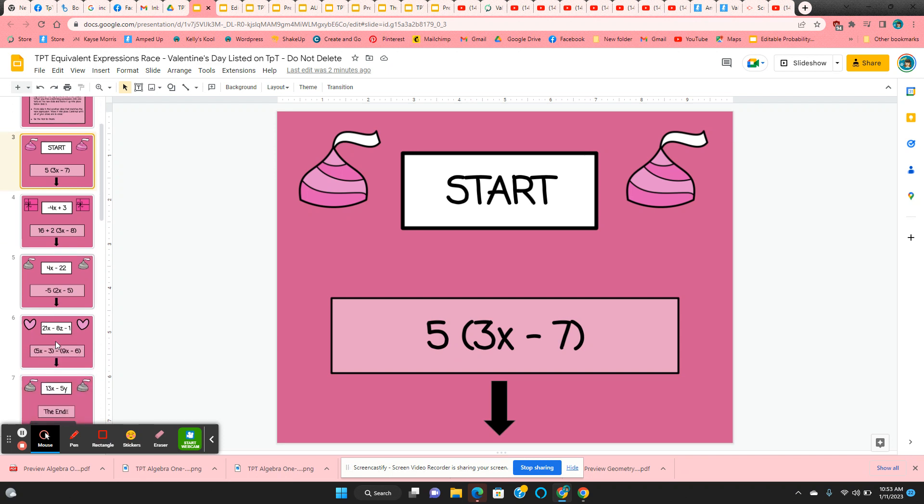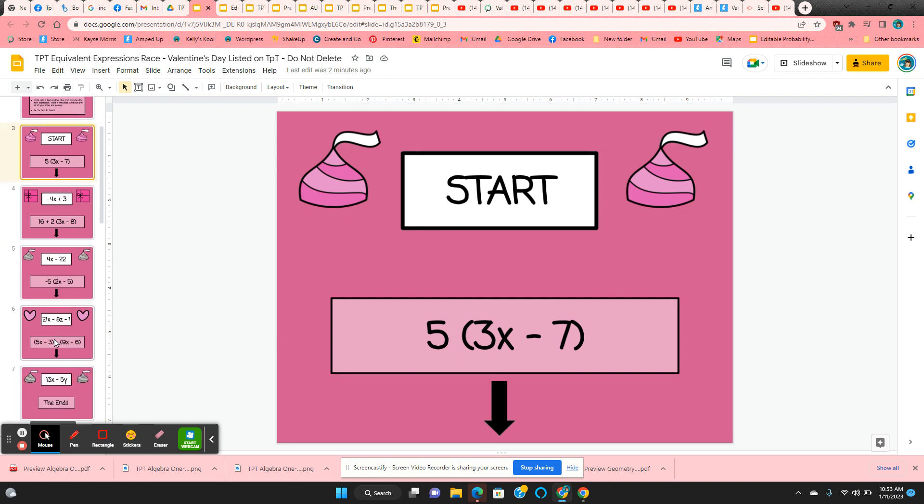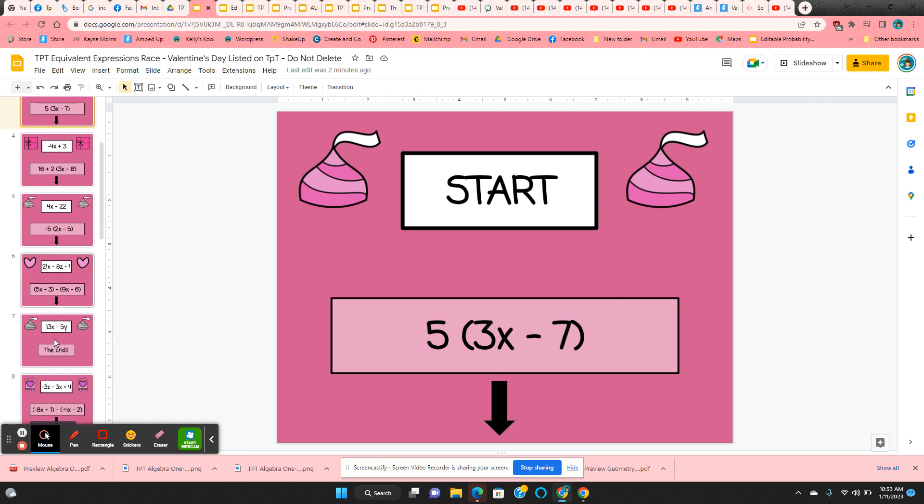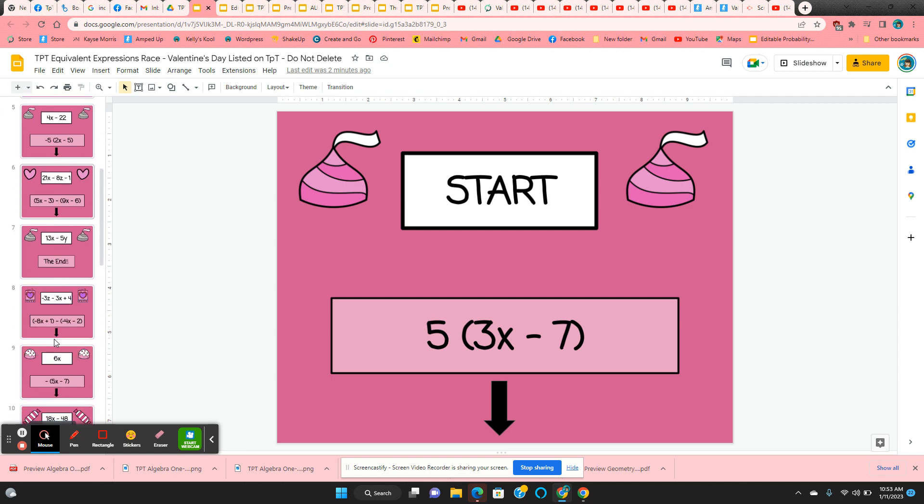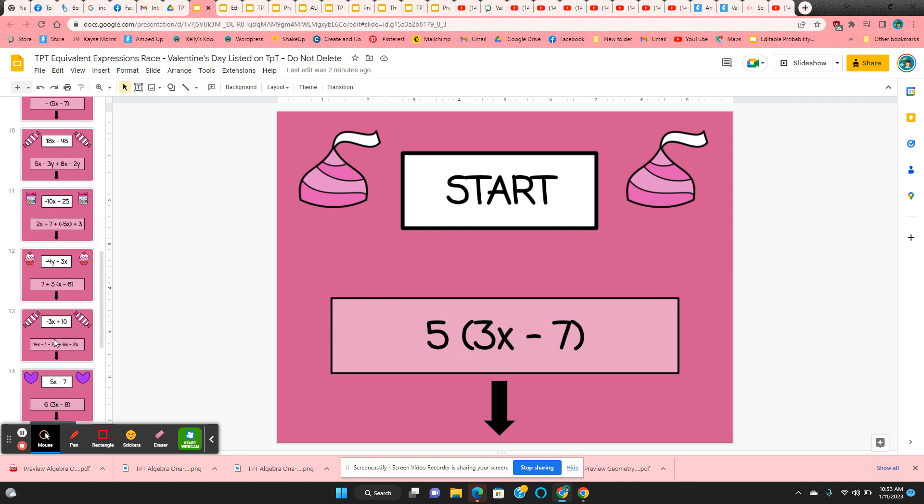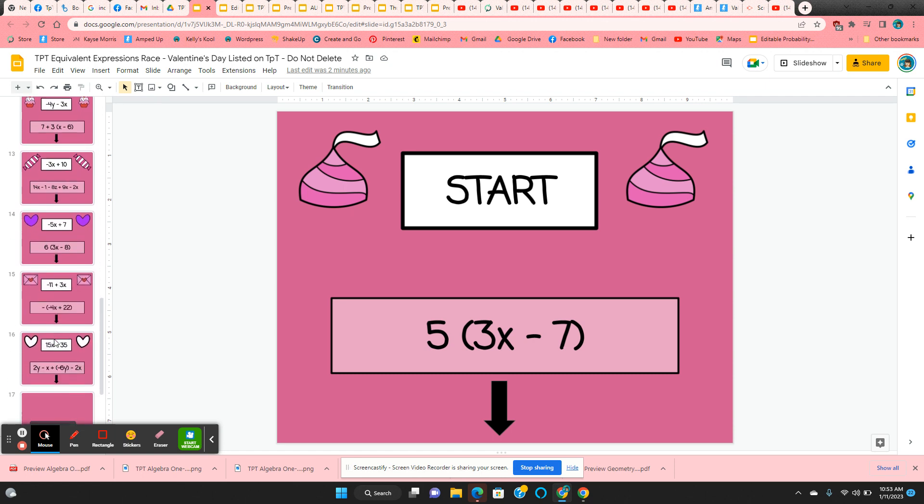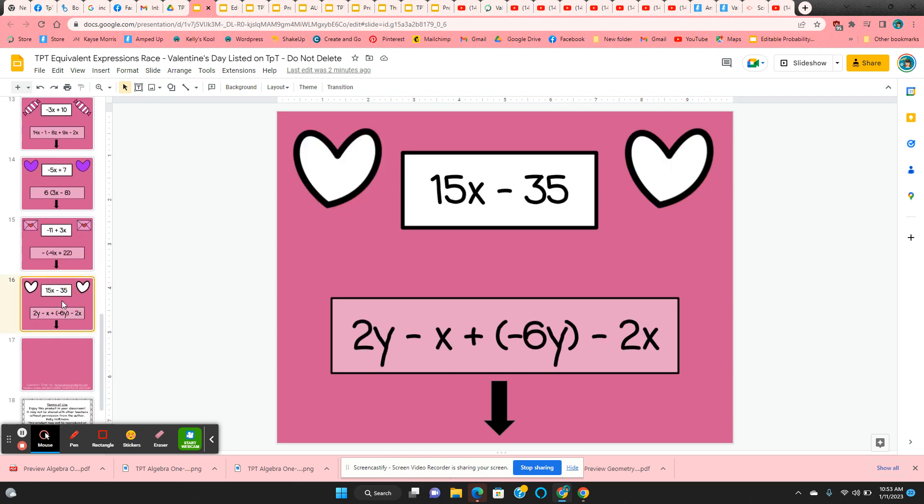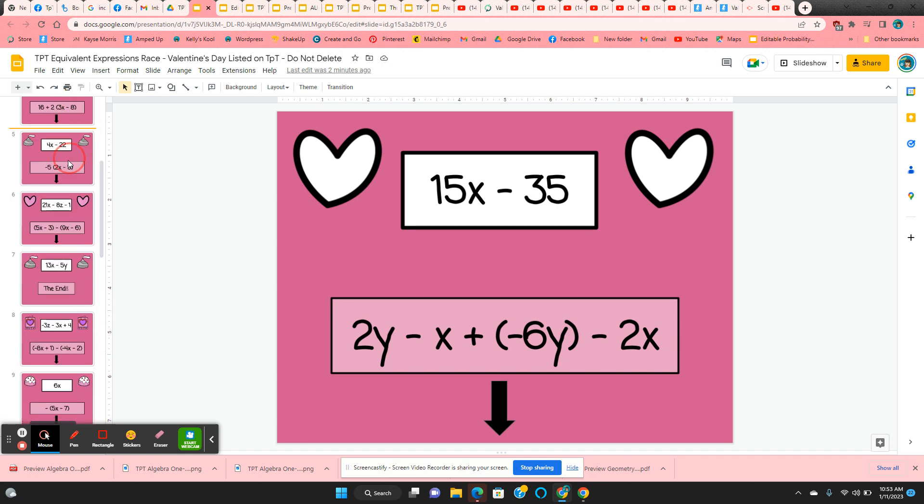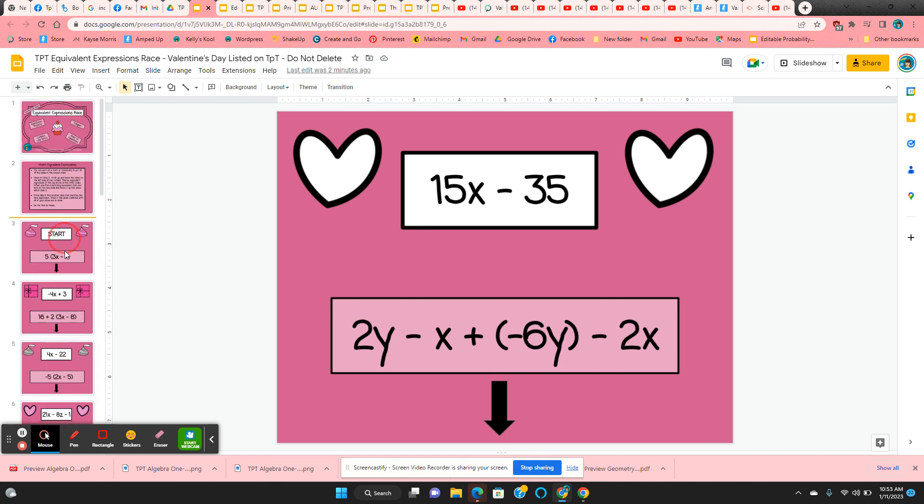They're going to find in one of the white boxes on the other slide 15x negative 35. They scroll up and down and here they found it. They're going to click and hold here on the left and move it into place. We're putting all of these in order.